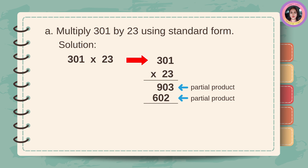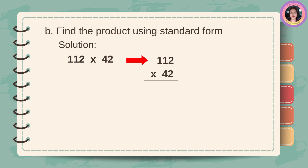Now, let's multiply: 2 times 1 is equal to 2, 2 times 0 is equal to 0, and 2 times 3 is equal to 6. 602 is also a partial product. Then, let's add: bring down 3, 0 plus 2 is equal to 2, 9 plus 0 is equal to 9, then bring down 6. The product is 6,923.